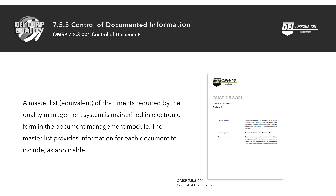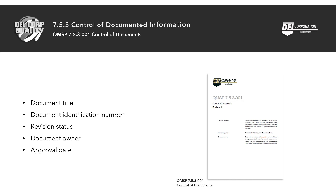A master list or equivalent of documents required by the quality management system is maintained in electronic form in the document management module of QISS. The master list provides information for each document to include, as applicable: document title, document identification number, revision status, document owner, and approval date.